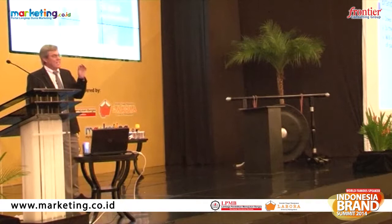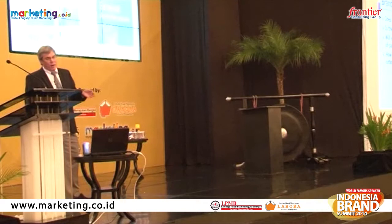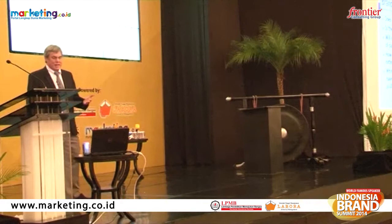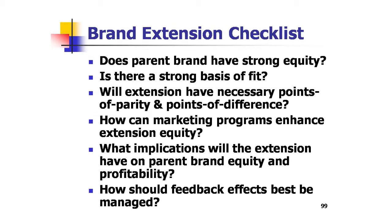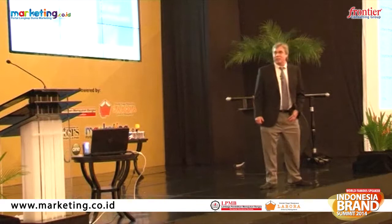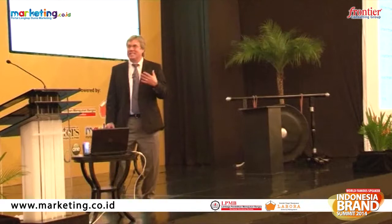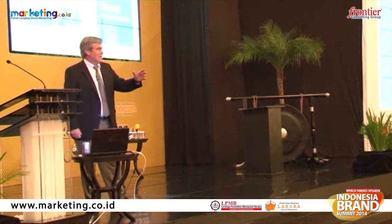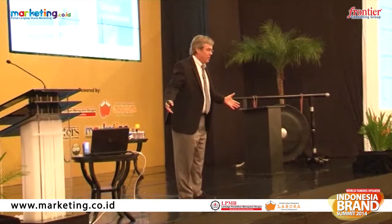Third: will the extension have the right competitive points of parity and points of difference? That is crucial — it's the biggest mistake people make. Fourth: how can marketing further enhance extension equity, and what kind of feedback effects will you have? How much will that extension help your parent brand, its equity, its profitability? You can also use this as a scorecard — a systematic way of scoring extensions. I've used this with several companies. The key is being systematic and thoughtful about where you can stretch your brand and where you cannot.